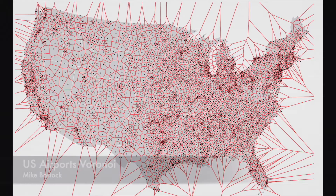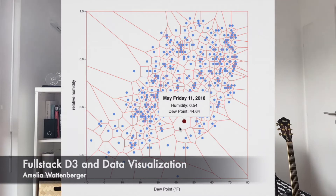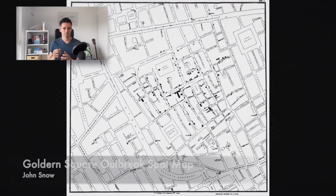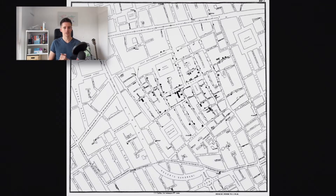Voronoi diagrams are used in a variety of domains — from health to science to aviation — for example, to find the nearest airport. They can also be used in other data visualization contexts, like in a scatter plot to display the tooltip of the nearest point from your mouse. You can also find this pattern in nature, like in giraffe skin. My favorite and most famous example is John Snow's cholera map from 1854.